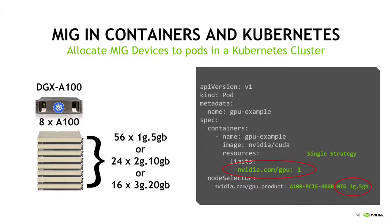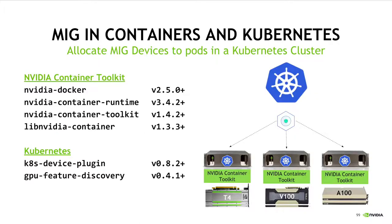In order for MIG devices to be advertised like this, the K8s device plugin must be configured with what's called the mixed MIG strategy, so named because a mixture of different MIG devices and full GPUs can all be advertised from the same underlying node. This is in contrast to the single strategy, which allows one to continue using the existing nvidia.com/GPU resource type, but makes sure that labels are defined such that a user is able to get to the underlying MIG device type they want. That's really all there is to it from the end user's perspective.